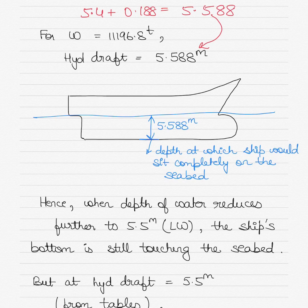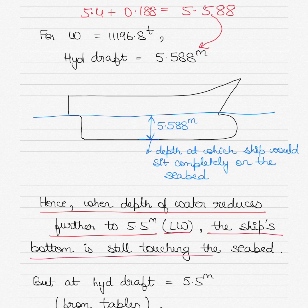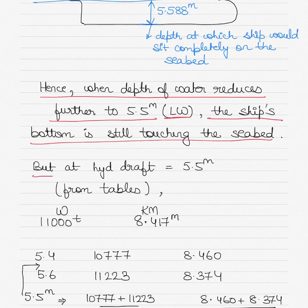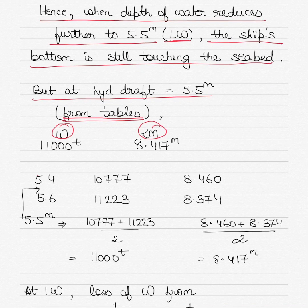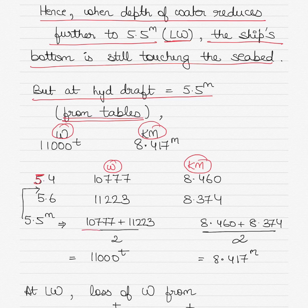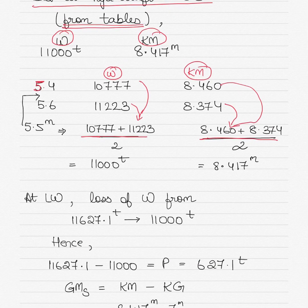The hydrostatic draft at first contact is 5.588 meters, but the water continues to drop to 5.5 meters at low water, so the ship's bottom remains on the seabed. At a hydrostatic draft of 5.5 meters from the tables, displacement equals 11000 tonnes and KM equals 8.417. These values are found by averaging the values at drafts 5.4 and 5.6.